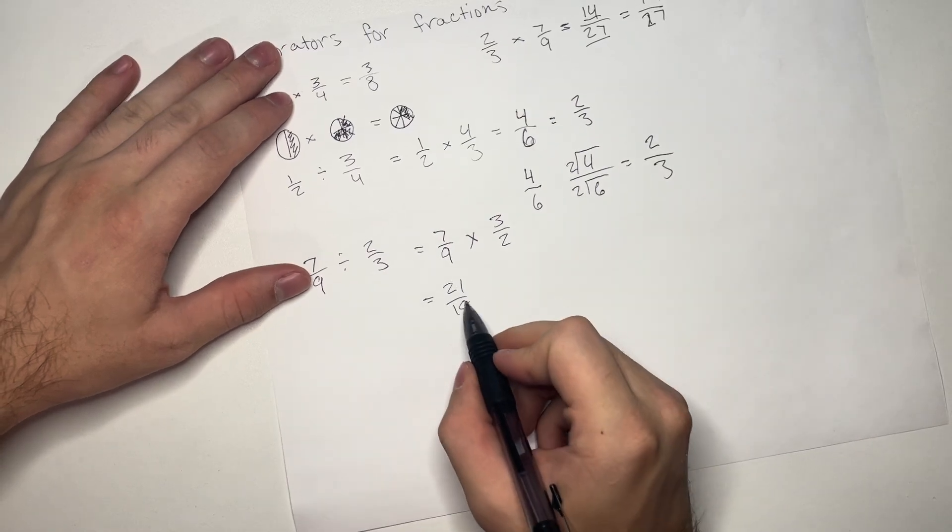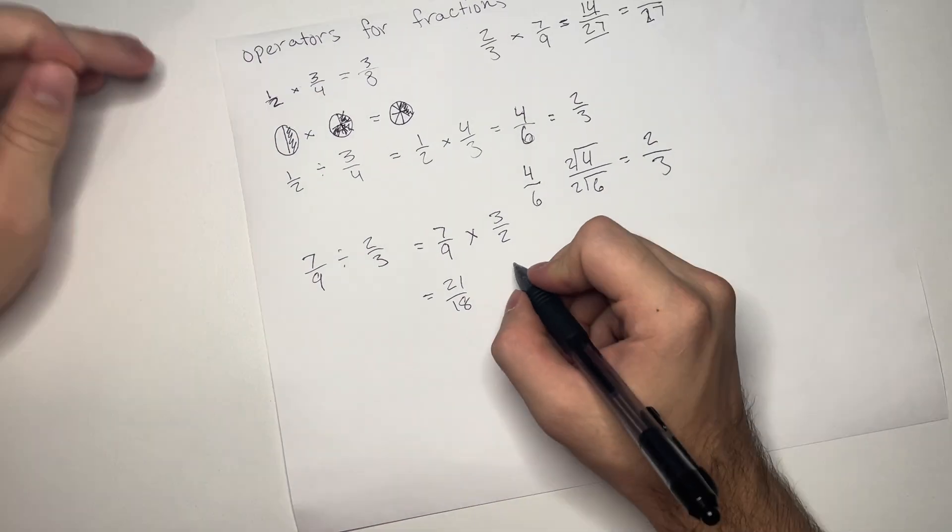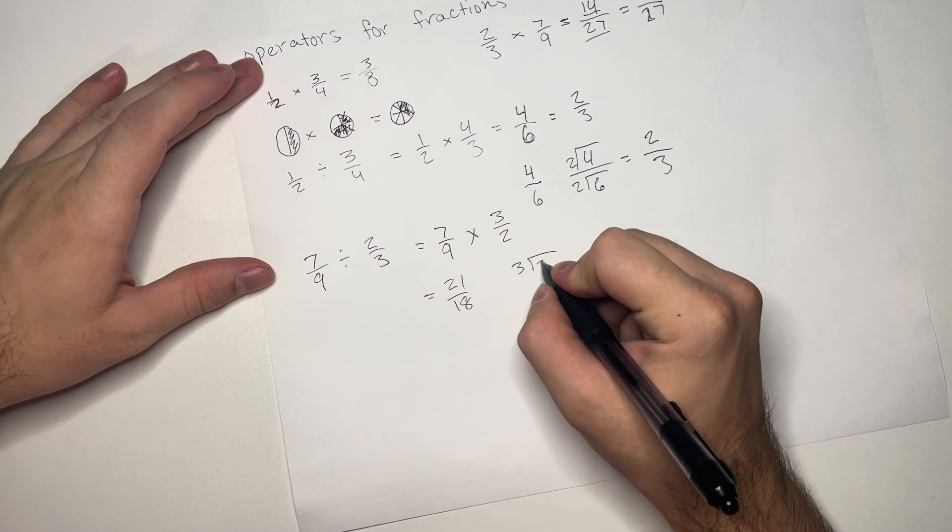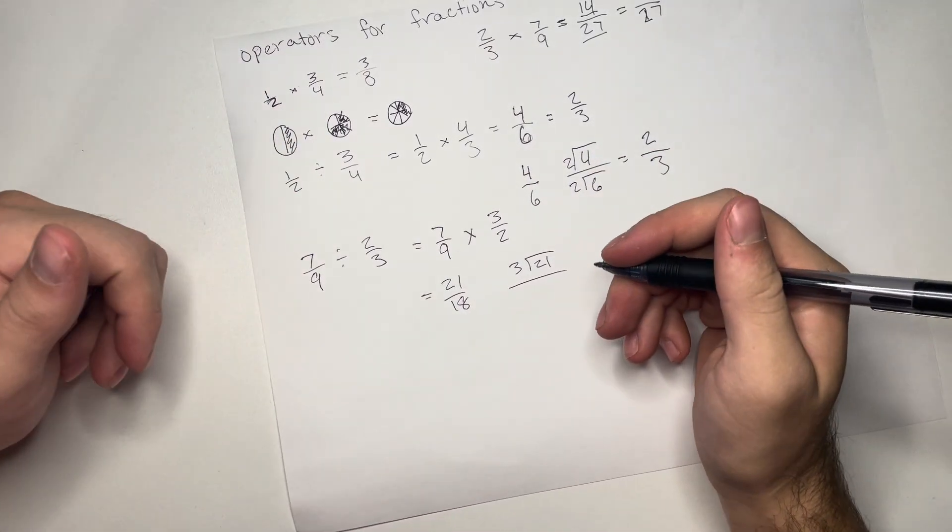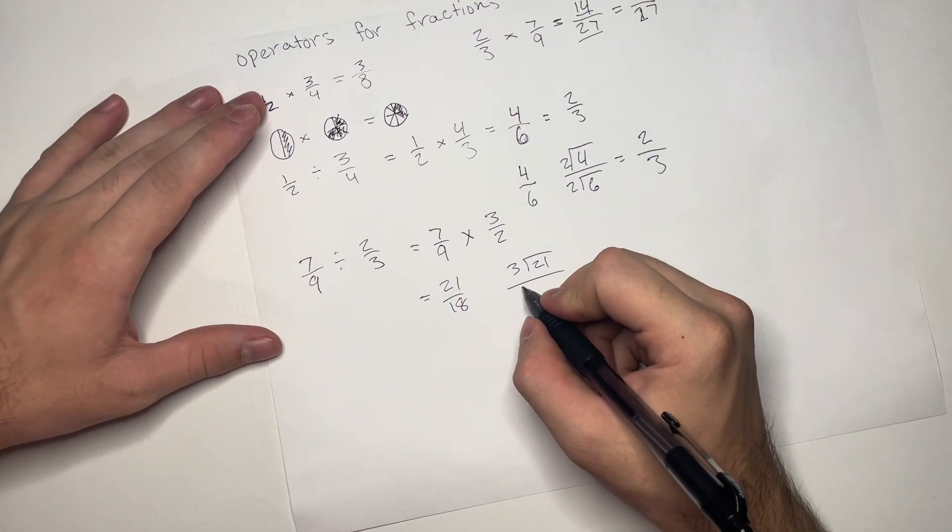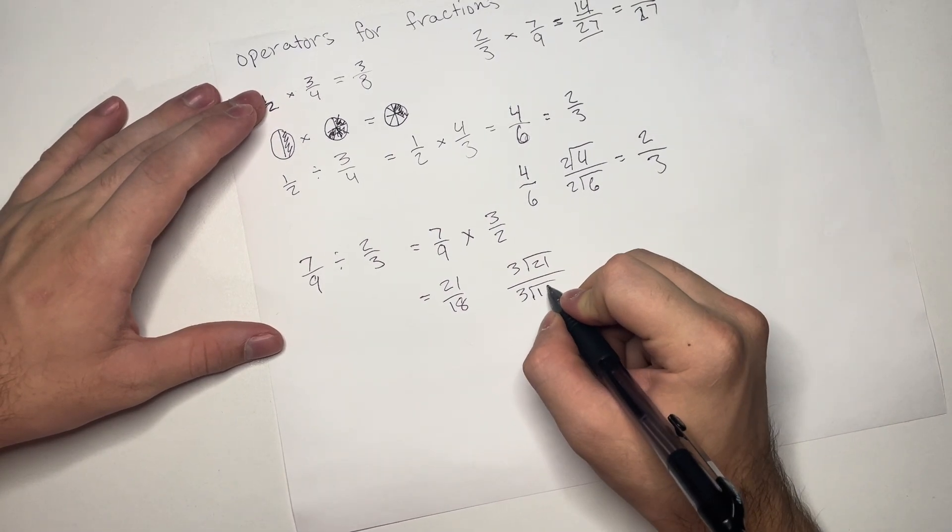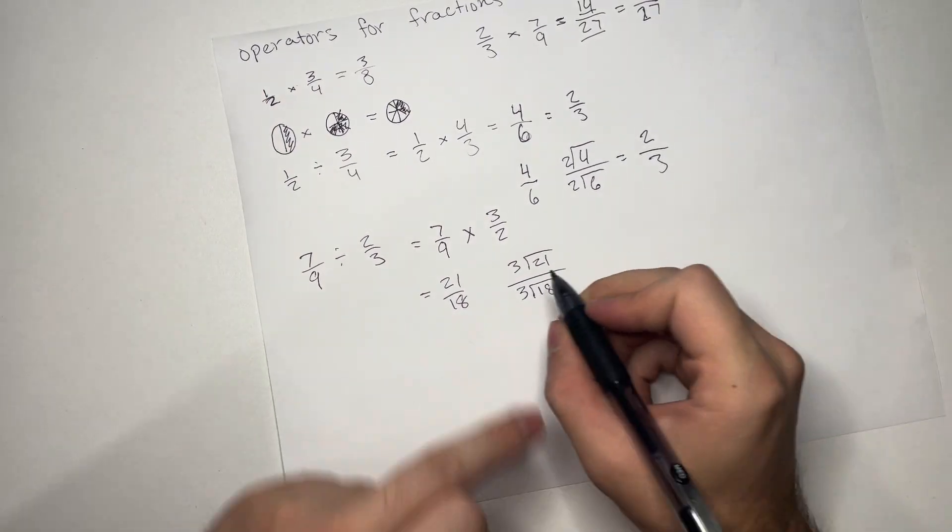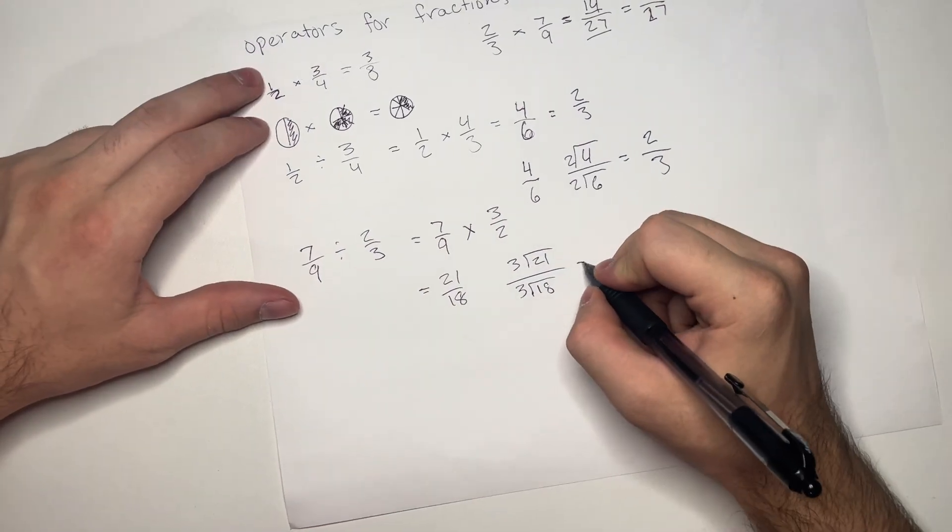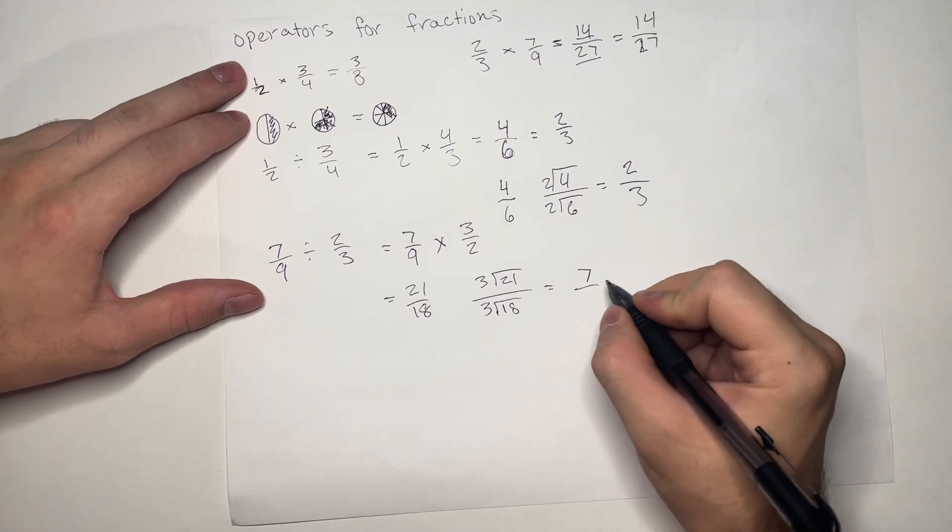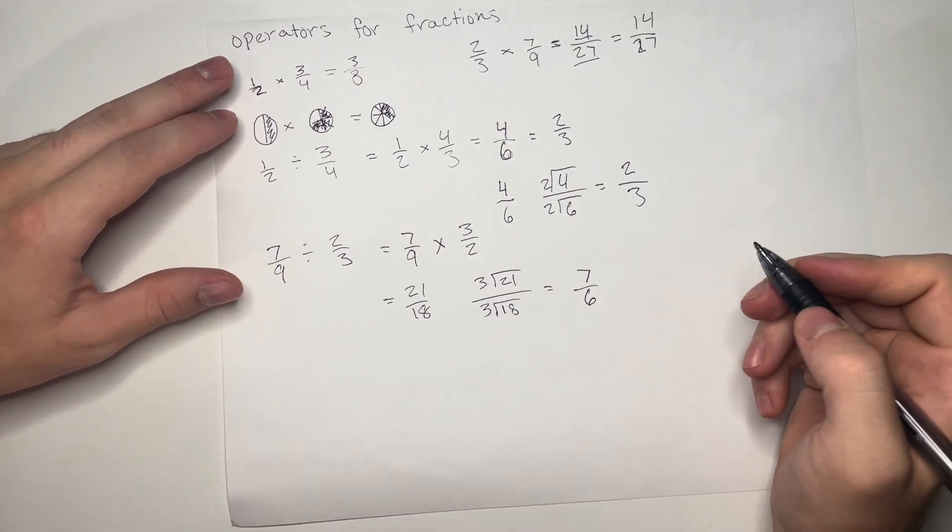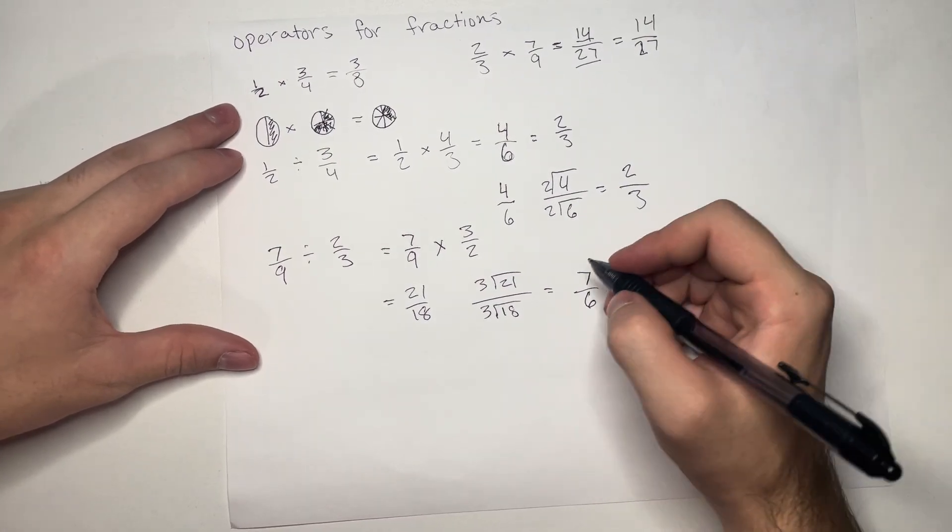3 goes into both of these, so again, we need to divide. And we're doing this to reduce it into a more simple form. 3 goes into 21, 7 times. And 3 goes into 18, 6 times. So, we get 7 over 6 as our final answer there.